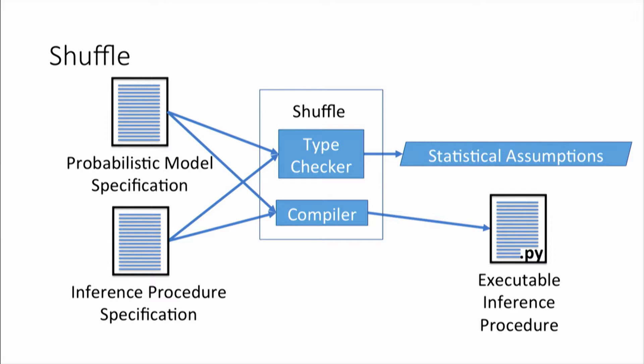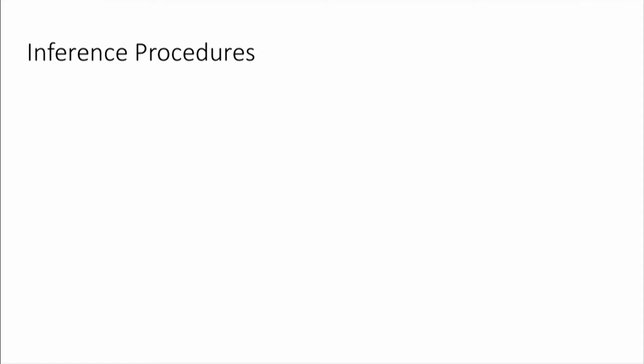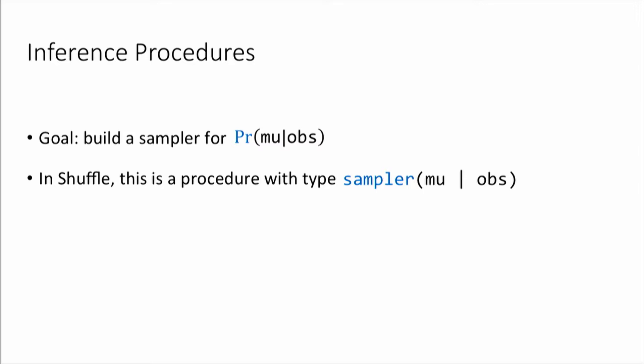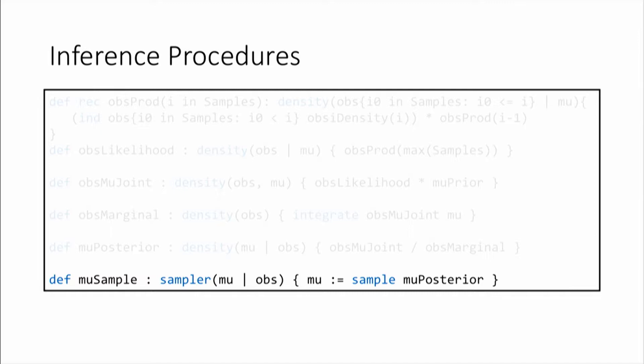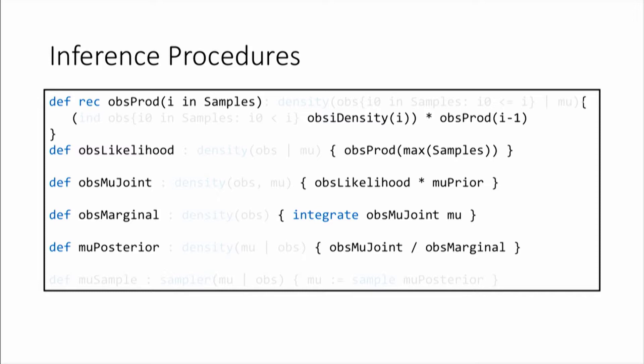Now let's talk about inference procedures. For this example, we want to build a sampler for mu conditioned on obs. In Shuffle, this means building an inference procedure as a distribution with the type 'sampler mu given obs'. The last line is responsible for the sampling — it samples from the mu posterior density — and the remaining lines are pieces of density arithmetic that go into computing this posterior.